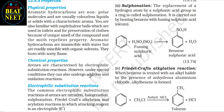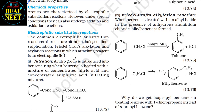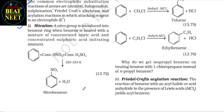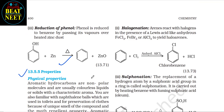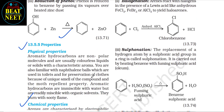Chemical properties: arenes are characterized by electrophilic substitution reactions; under special conditions they can also undergo addition and oxidation reactions. The common electrophilic substitution reactions of arenes are nitration, halogenation, sulfonation, Friedel-Crafts alkylation, and acylation — in which the attacking reagent is an electrophile. (1) Nitration: a nitro group is introduced into benzene ring when benzene is heated with a mixture of concentrated nitric acid and concentrated sulfuric acid (nitrating mixture), forming nitrobenzene. (2) Halogenation: arenes react with halogens in the presence of a Lewis acid like anhydrous FeCl₃, FeBr₃, or AlCl₃ to yield haloarenes.